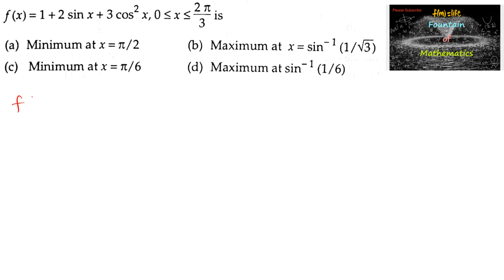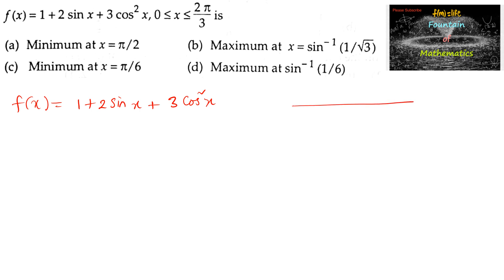f(x) = 1 + 2sin(x) + 3cos²(x) is having a minimum or maximum at x = π/2, or x = π/6, or x = sin⁻¹(1/3) in the interval 0 to 2π/3. Note that 2π/3 is 120 degrees.